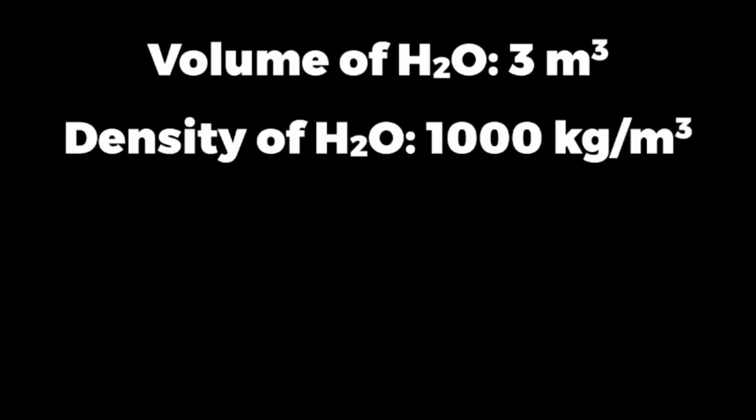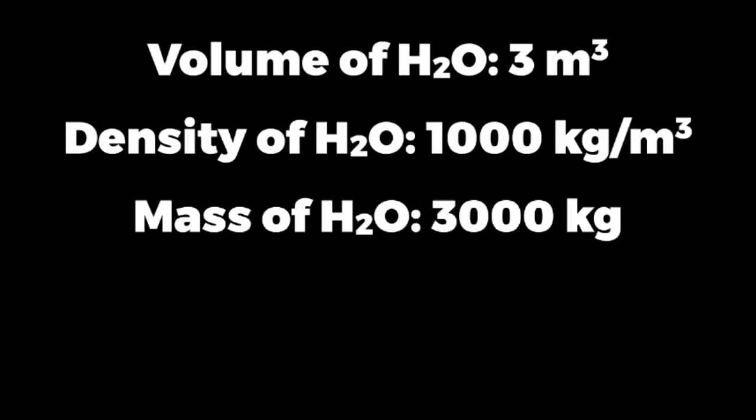Now we know that the density of water is 1000 kilograms per cubic meter. Knowing that density is mass over volume, we can calculate the mass of water by multiplying the volume and the density to get 3000 kilograms of water displaced.